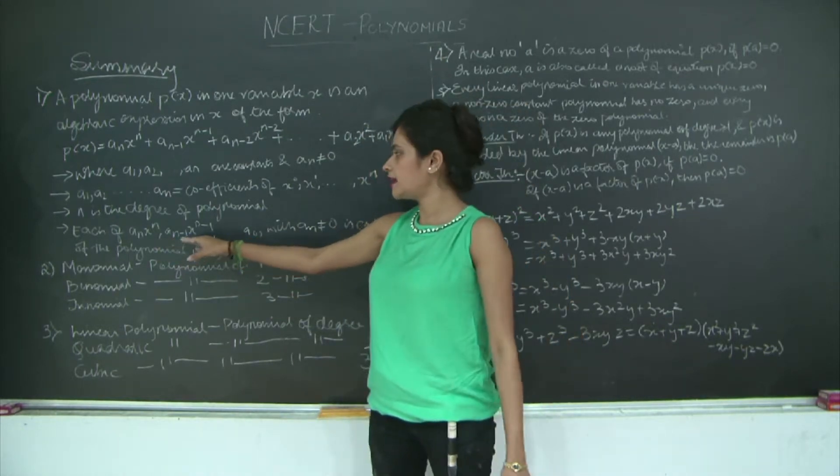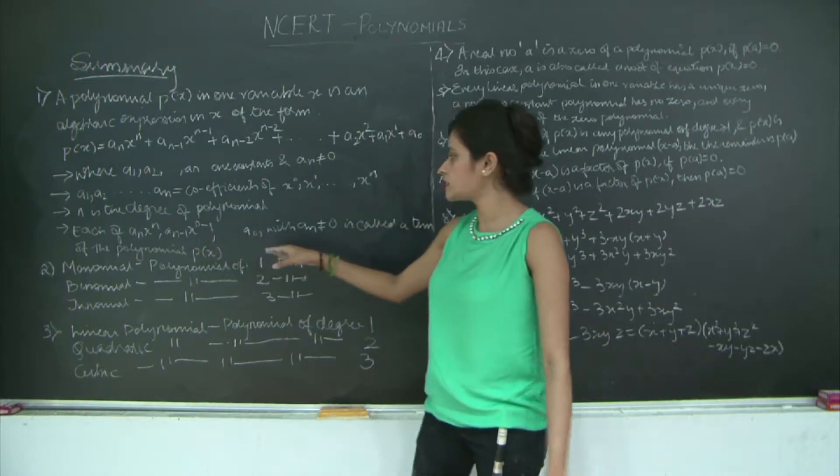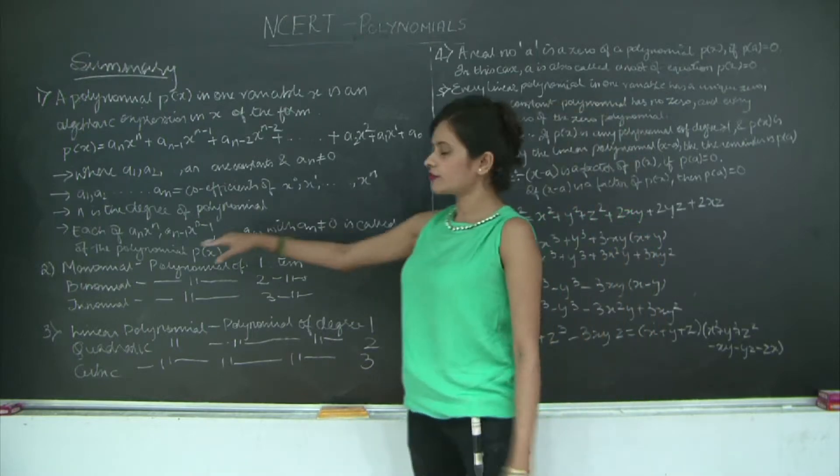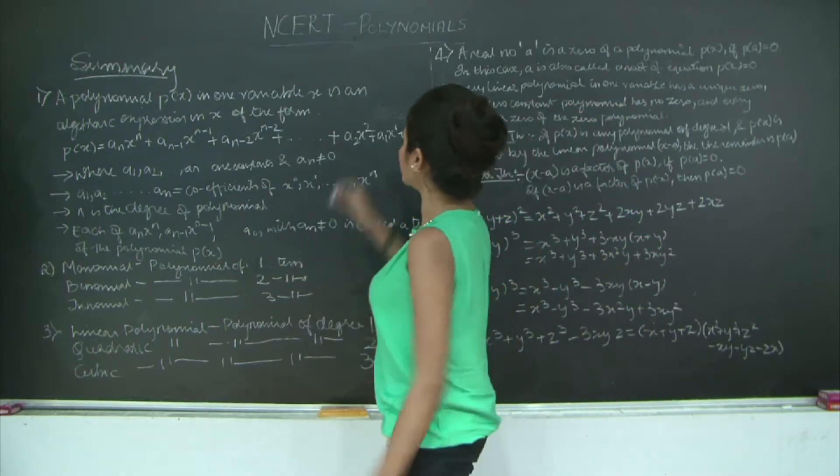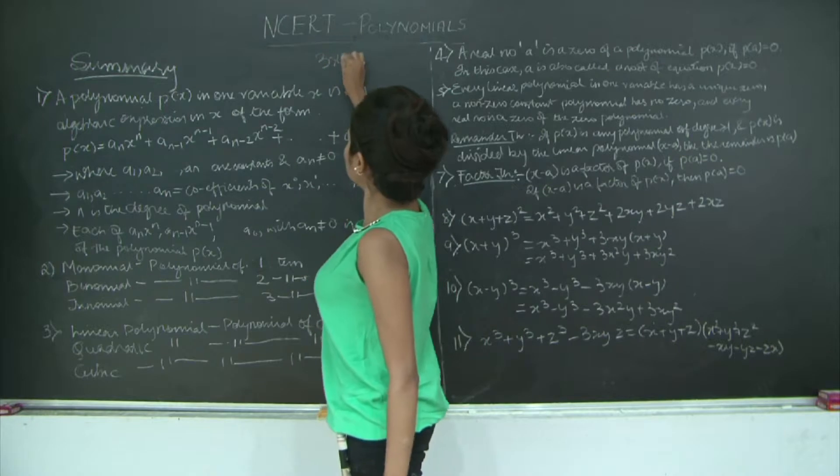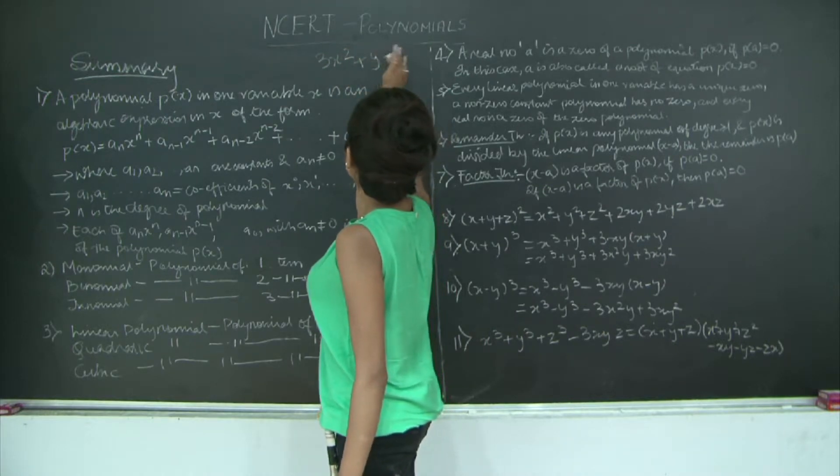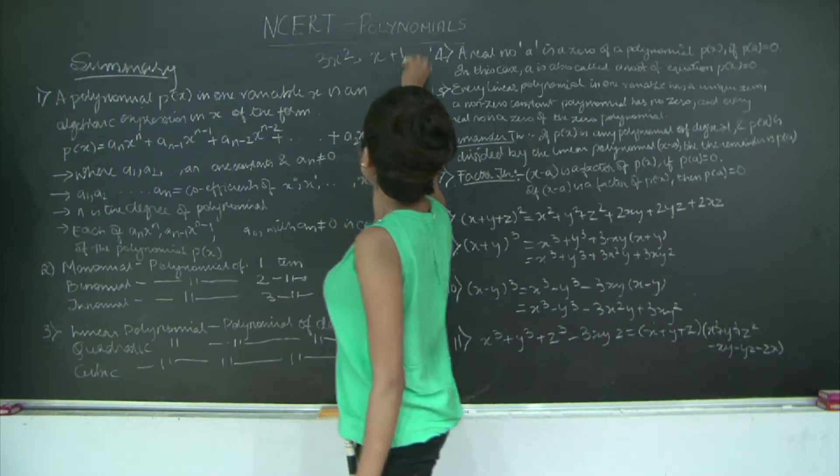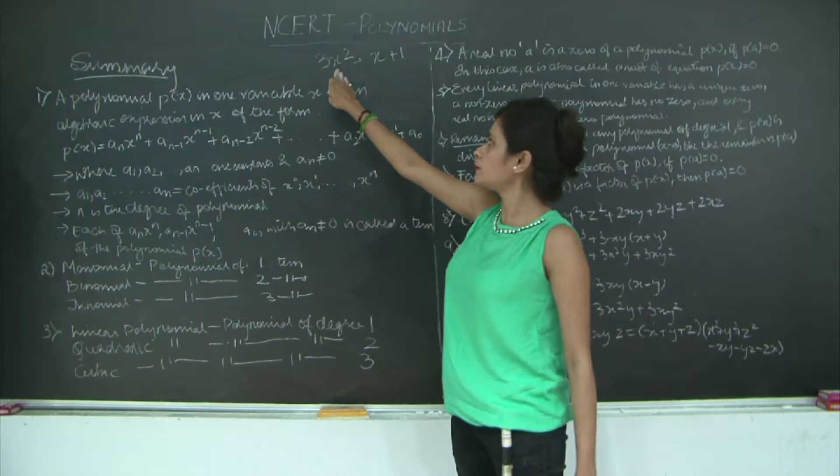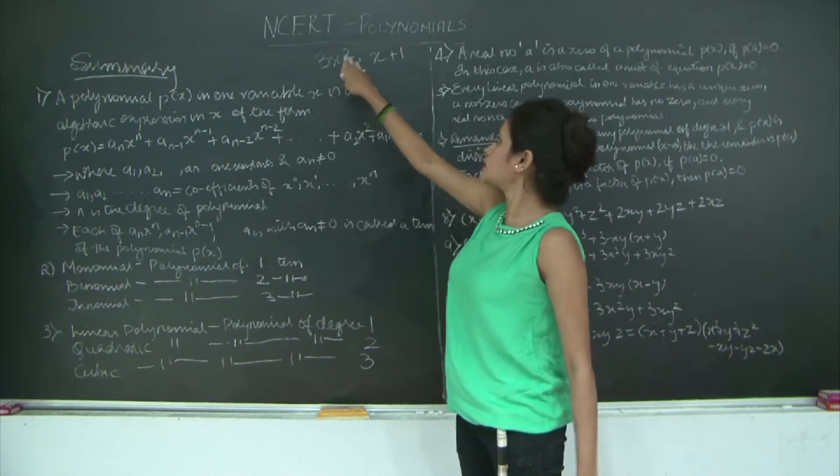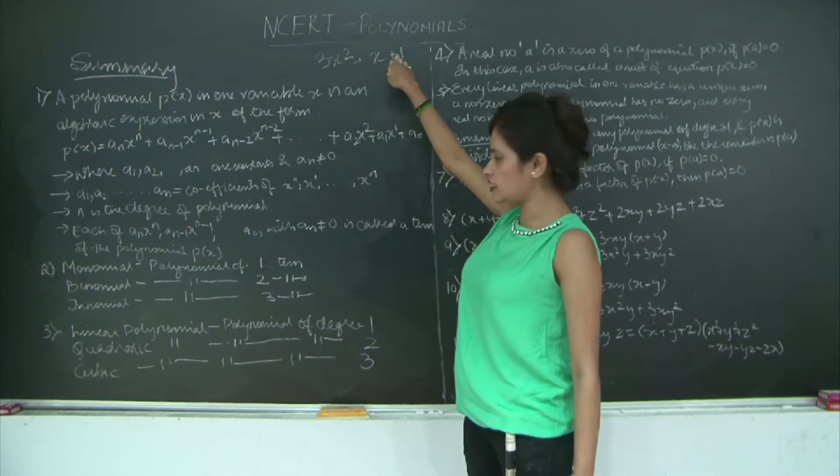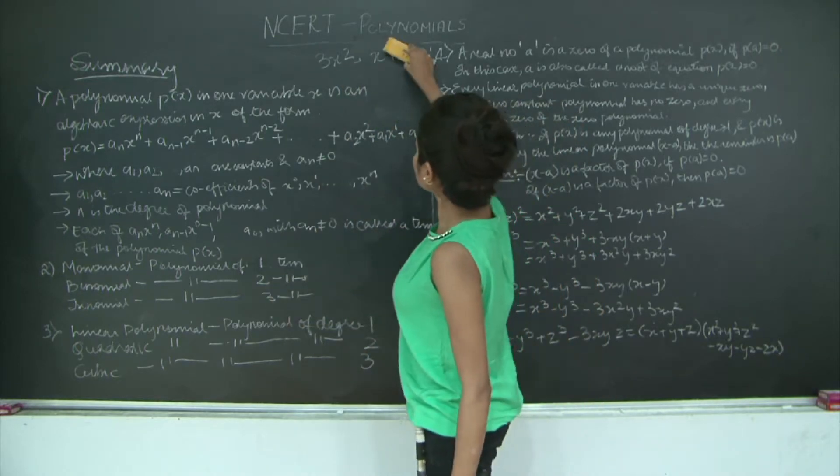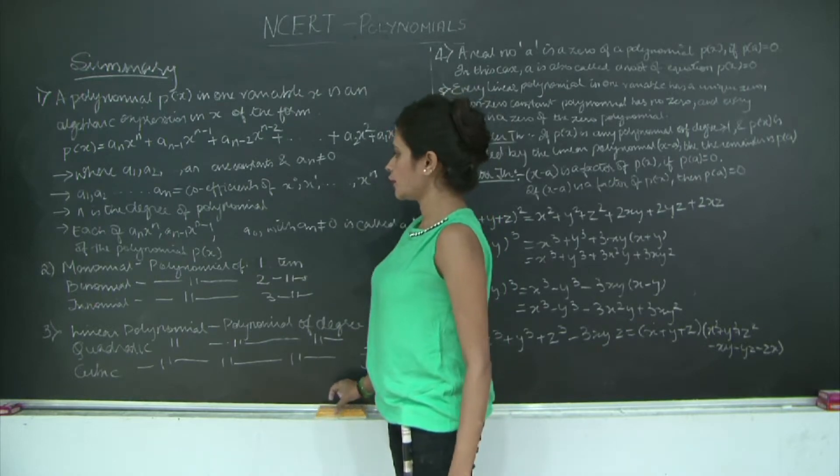Each of aₙ·xⁿ, a₍ₙ₋₁₎·x⁽ⁿ⁻¹⁾ up to a₀ with aₙ not equal to 0 is called a term of the polynomial. If I have an expression, let's say 3x² plus x plus 1, I have three terms over here. How come three terms? 3x² is one term, x is one term, and 1 is the other term. So there are three terms.